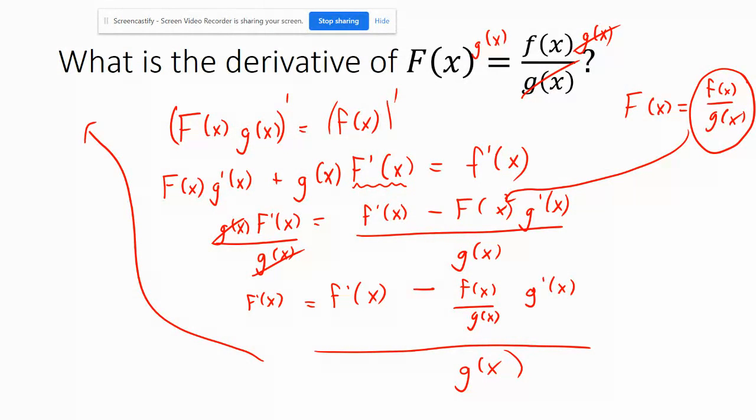And we're going to divide this guy over here. So we have f prime of x over g of x, minus f of x, g prime of x, over g of x squared. So g of x divided by g of x there. Next up, I want to be able to subtract these two fractions together. So I'm just going to multiply the top and the bottom by g of x here.